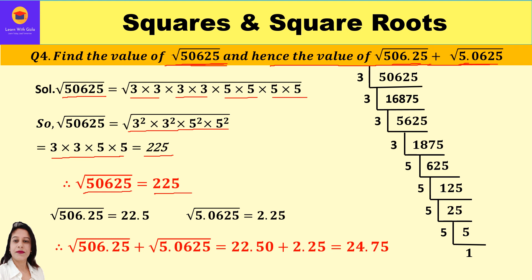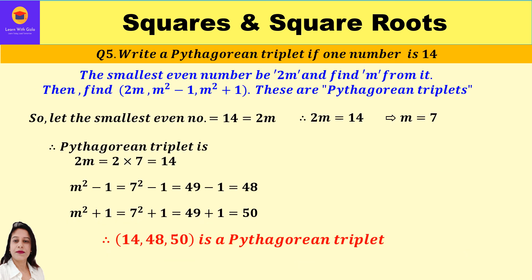Now, √506.25 has two decimal places, so its square root is 22.5 — we take 225 and place one decimal. √5.0625 has four decimal places, so its square root is 2.25 — two decimal places in the result. Therefore √506.25 + √5.0625 = 22.50 + 2.25 = 24.75.